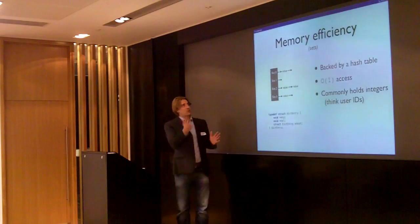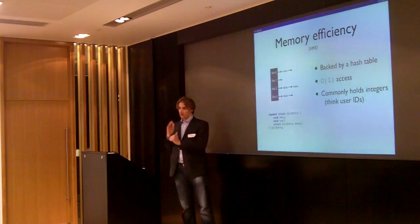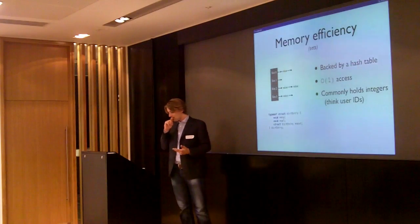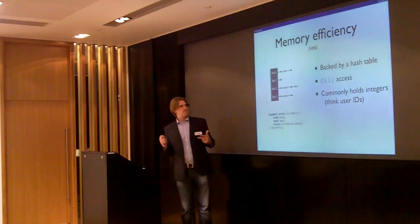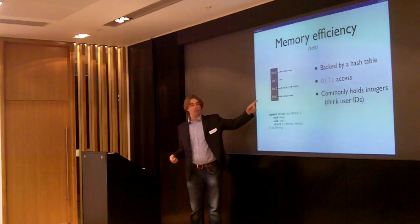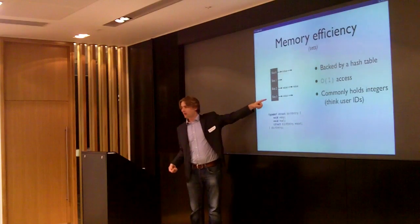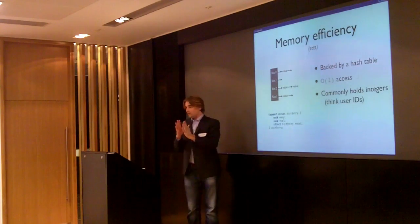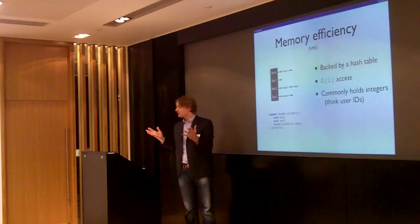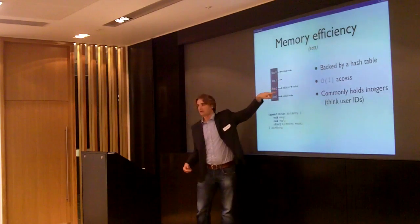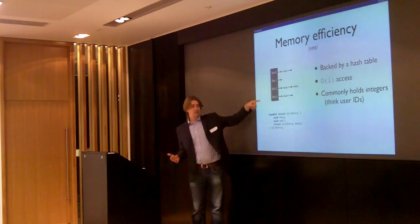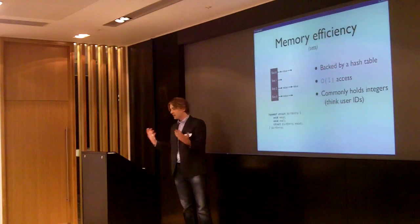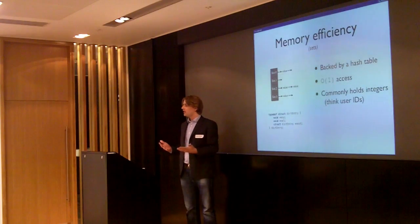Now I'm talking about memory efficiency on sets. For hashes we have zip maps, for lists we have zip lists, and for sets we have a new thing in 2.2. Currently sets are backed by a hash table. A hash table has slots — always a power of 2 — and every slot can hold a linked list of values. When you have a value, you apply a hash function resulting in an integer, take the modulo of the number of slots, and that gives you the slot. This yields constant time lookup regardless of the hash table size, which is exactly what the SISMEMBER command in Redis uses.